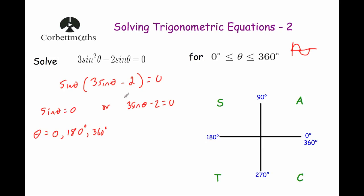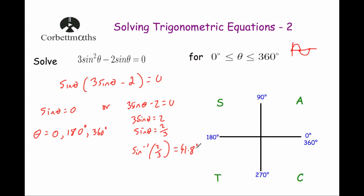Now we solve the second factor: 3 sine β minus 2 equals zero. Rearranging, 3 sine β equals 2, and dividing by 3 gives sine β equals 2 thirds. We take the inverse sine of 2 thirds, which gives 41.8 degrees to one decimal place.